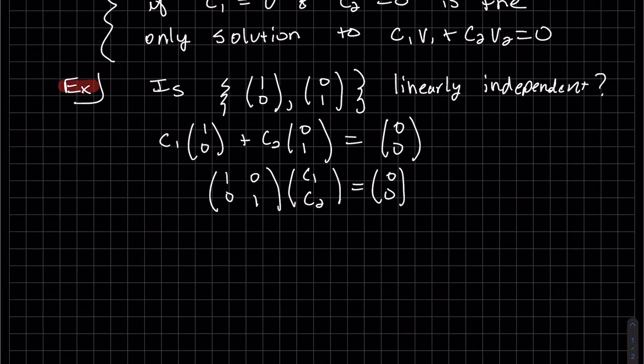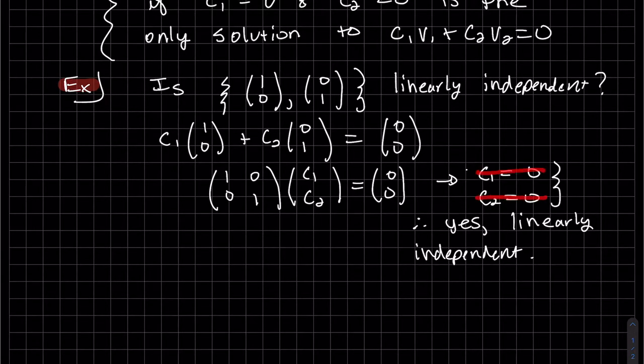And we can pretty much just see here, this equation right here, this times this is equal to zero. We write that out, and this times this is c2 equals zero. That's our solution. So linearly independent, since c1 and c2 are our solution, or the only solution.